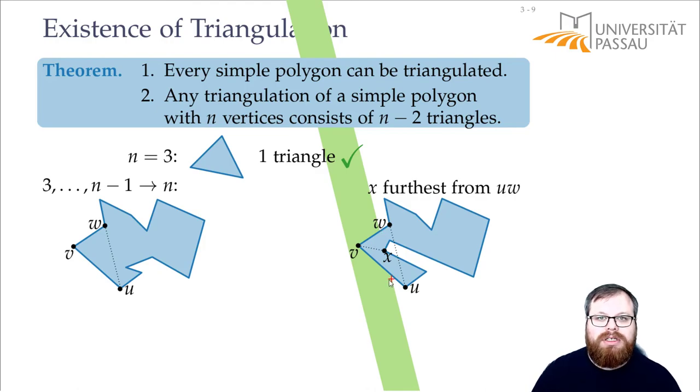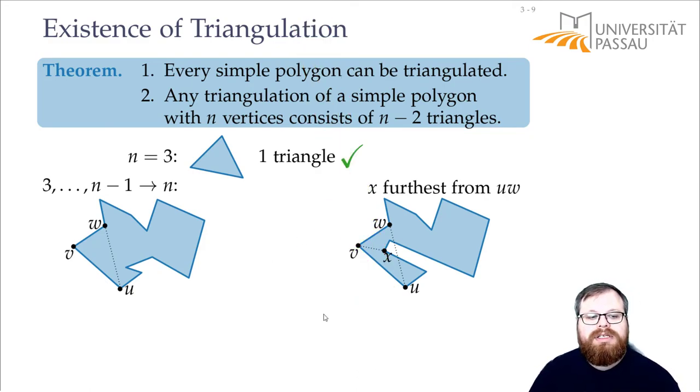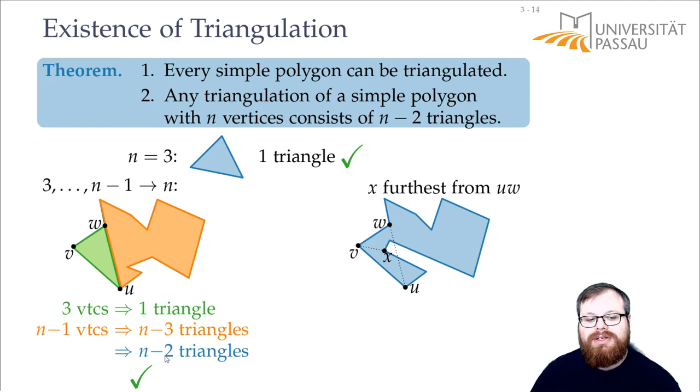But if there is no corner inside here, then it cannot be that the boundary goes in and goes out again. So there can be no part of the boundary that's intersected by the segment. And that means that the whole segment lies inside the polygon. So we can definitely add it. So in the left case, we get a triangle and a polygon of size n minus one. That gives us one triangle and n minus three triangles, which is n minus two. And in the right case, we get two polygons.